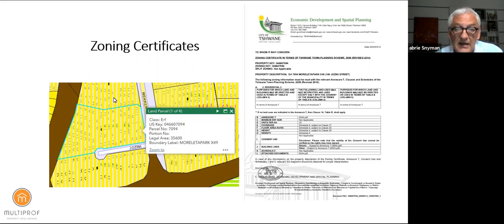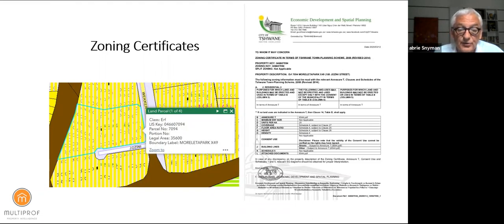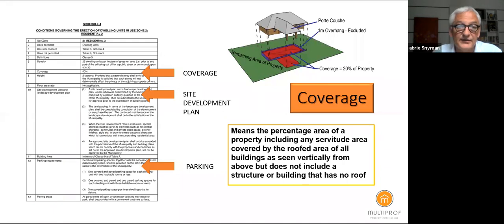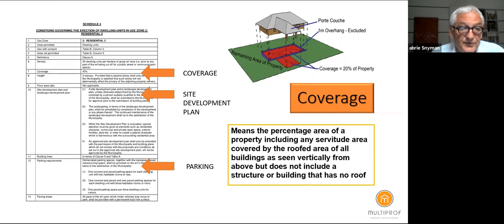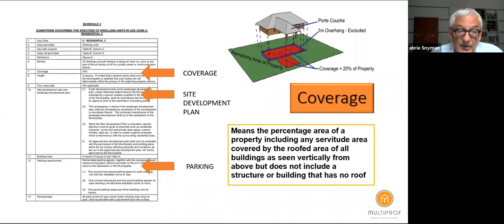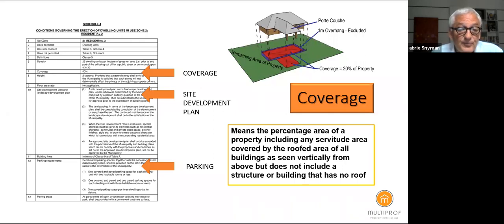This is from the Pretoria Tswane town planning scheme. Complexes will typically be zoned residential two, with a standard set of rules to adhere to. If there is no schedule attached, it will refer to Schedule Four in Tswane, which gives coverage — typically 40%, though this can differ, so you cannot take it as a given. You need to get the information for your specific complex. It refers to the need for a site development plan and parking requirements.